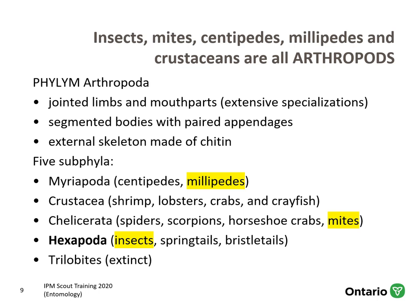Insects, mites, centipedes, millipedes, and crustaceans are all arthropods — all animals in the phylum Arthropoda. This means they have jointed limbs and jointed mouthparts with extensive specializations, segmented bodies with paired appendages that give flexibility of movement. They also have an external skeleton of chitin, which is incredibly strong and helps protect against desiccation and mechanical injury. Knowledge about chitin has been important in the development of insecticides able to penetrate or affect the protective insect skeleton.